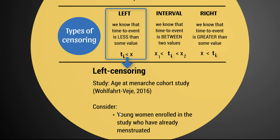This can happen when people have already experienced the event upon entering the study. You will never get this when looking at mortality or where the event is death, because you can't enroll someone into a study who's already dead. Here the event was just the onset of menstruation, so left censoring can occur in this case. If you read up on that study — I'll put the link in the description — you'll see how they managed to deal with their left censoring.